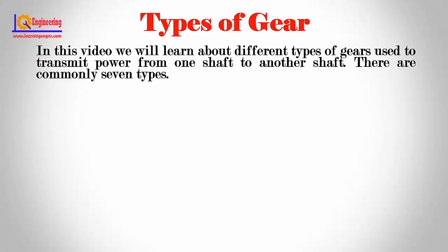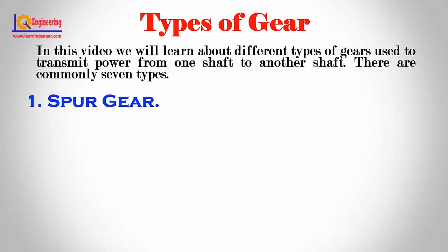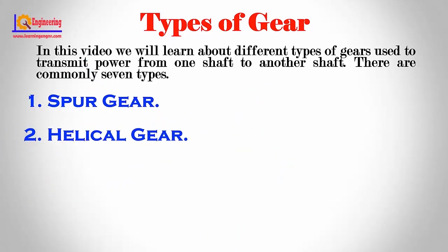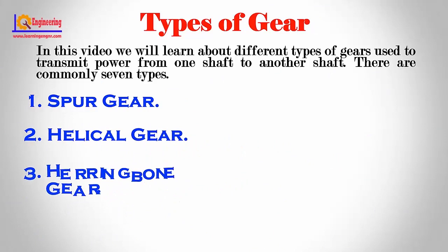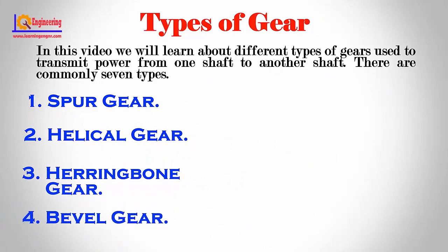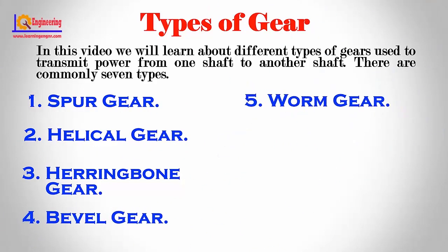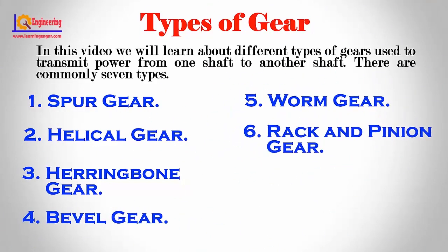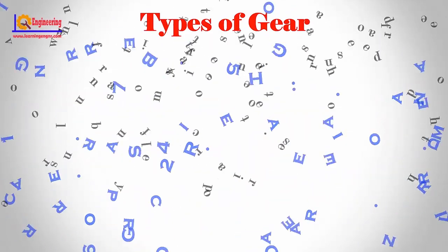There are commonly 7 types: 1. Spur gear. 2. Helical gear. 3. Herringbone gear. 4. Bevel gear. 5. Worm gear. 6. Rack and pinion gear. 7. Internal gear.